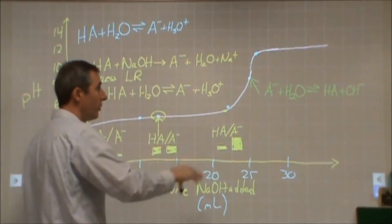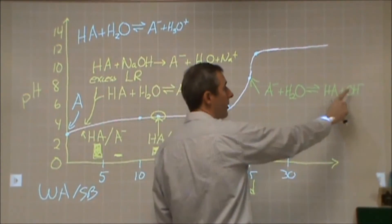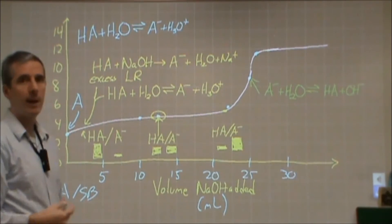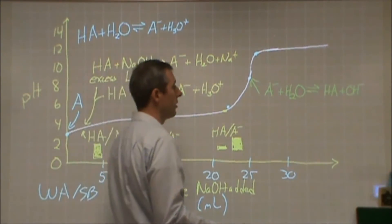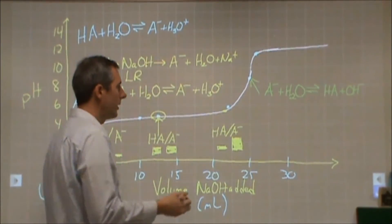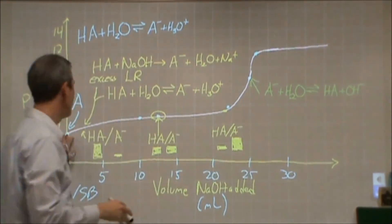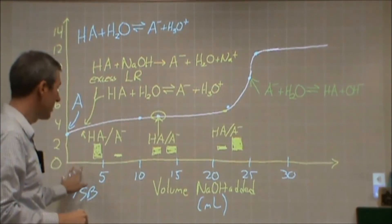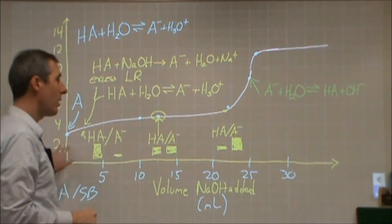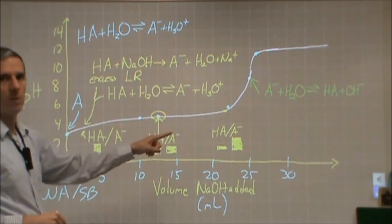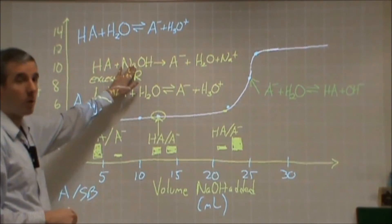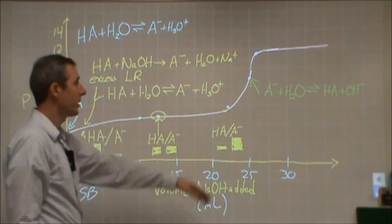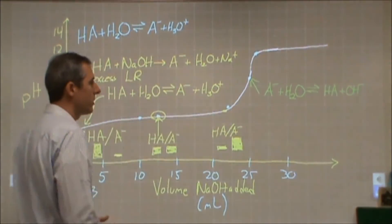A few important things about the equivalence point calculation. Now you're not producing H₃O⁺ — you're producing OH⁻. So if you solve for X and take the negative log, that's giving you pOH, not pH. You'll have to adjust. Also important: a lot of people assume the concentration of weak acid equals the original weak acid concentration, but that's wrong because you've been adding solution the entire time. If the concentration of weak acid and strong base were equal, the A⁻ concentration will actually be half of the original. This is a Kb equilibrium analysis.